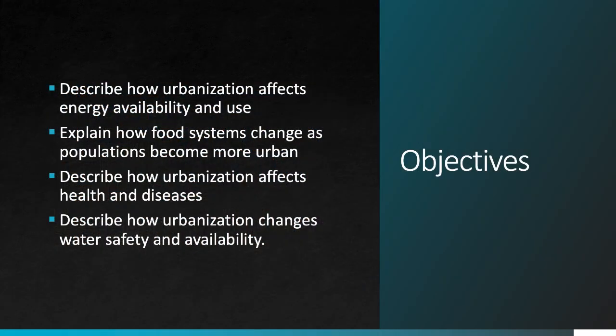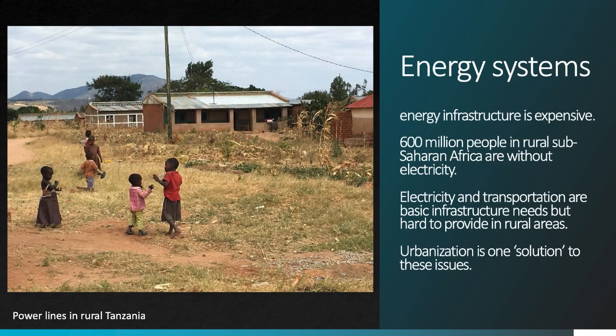Specifically in this video, we'll look at how urbanization affects energy availability and use. We'll take a short look at how food systems tend to change as populations become more urban, and this will set the stage for a much more detailed discussion of agriculture later. Urban settings can have a major effect on health and disease, so we'll explore those, and lastly we'll finish with a discussion of how urbanization affects water safety and availability. When I say energy system, I mean a combination of fuel supply type, energy distribution infrastructure, transportation infrastructure, and the many other factors that influence how we get and use energy.